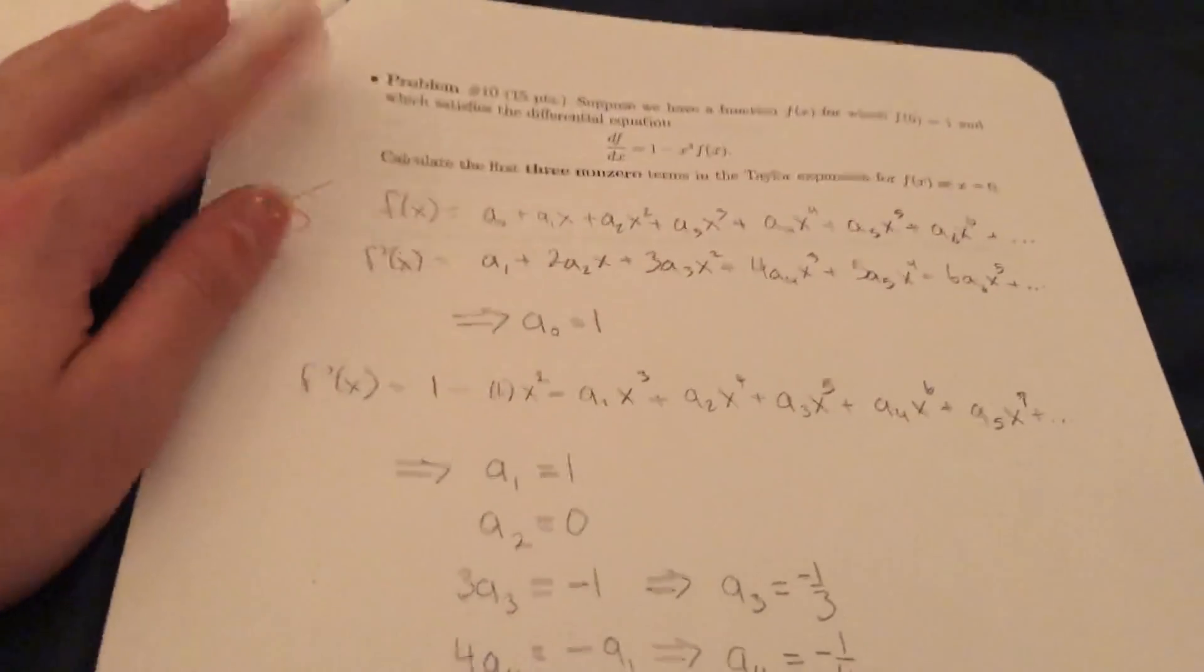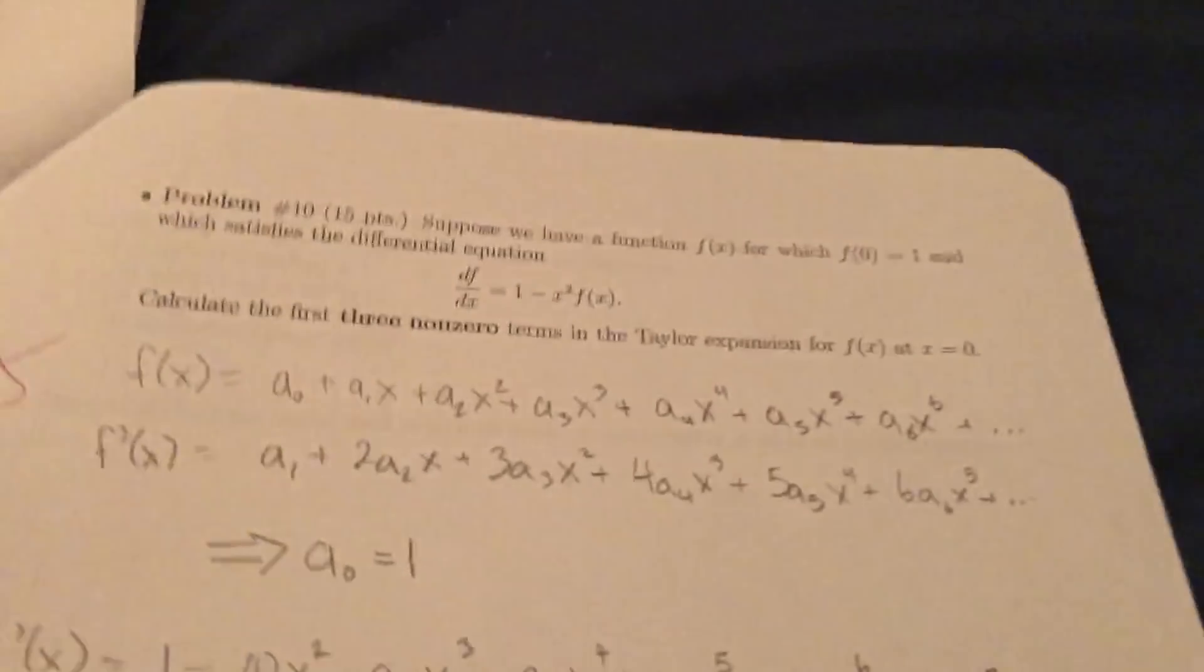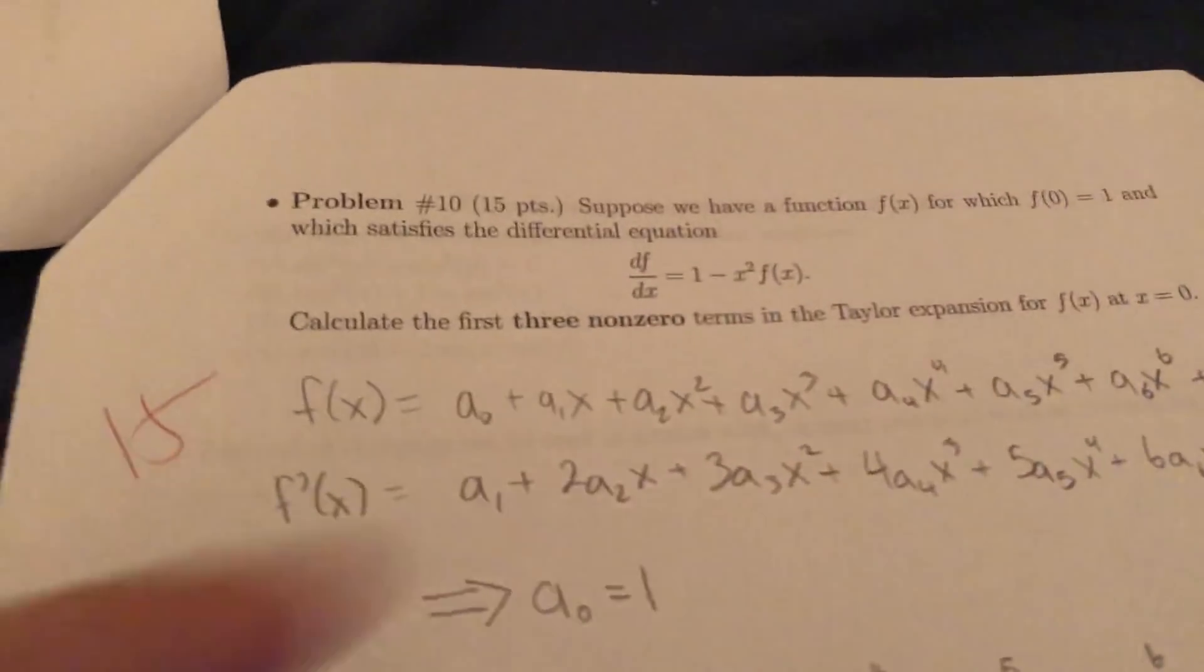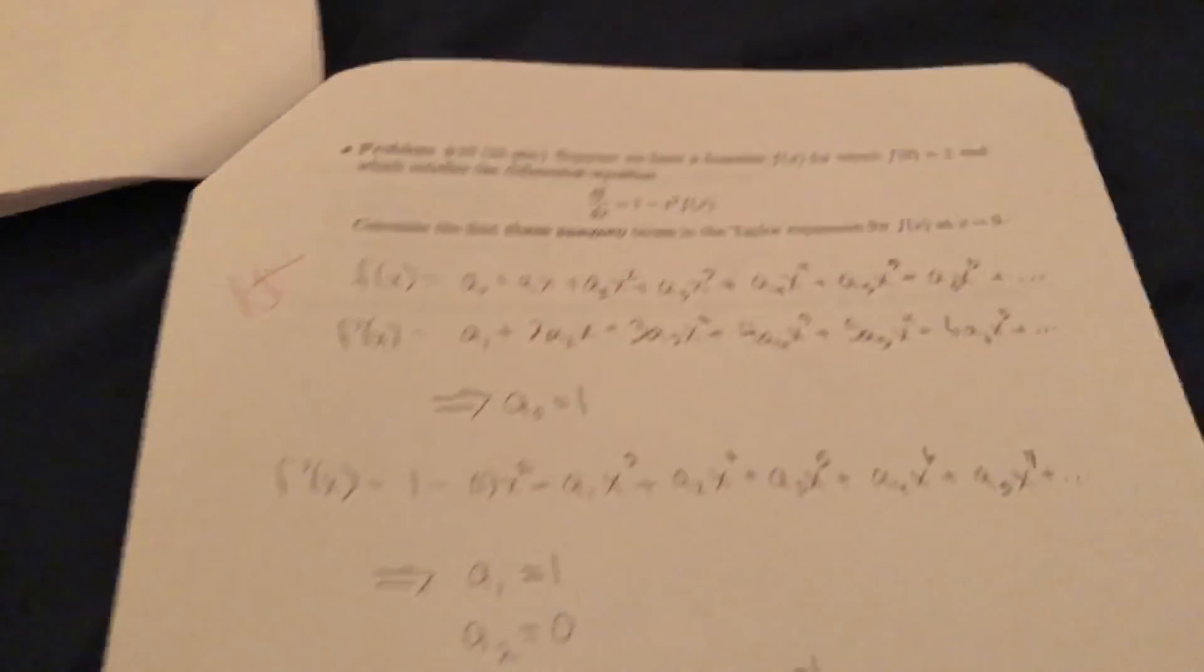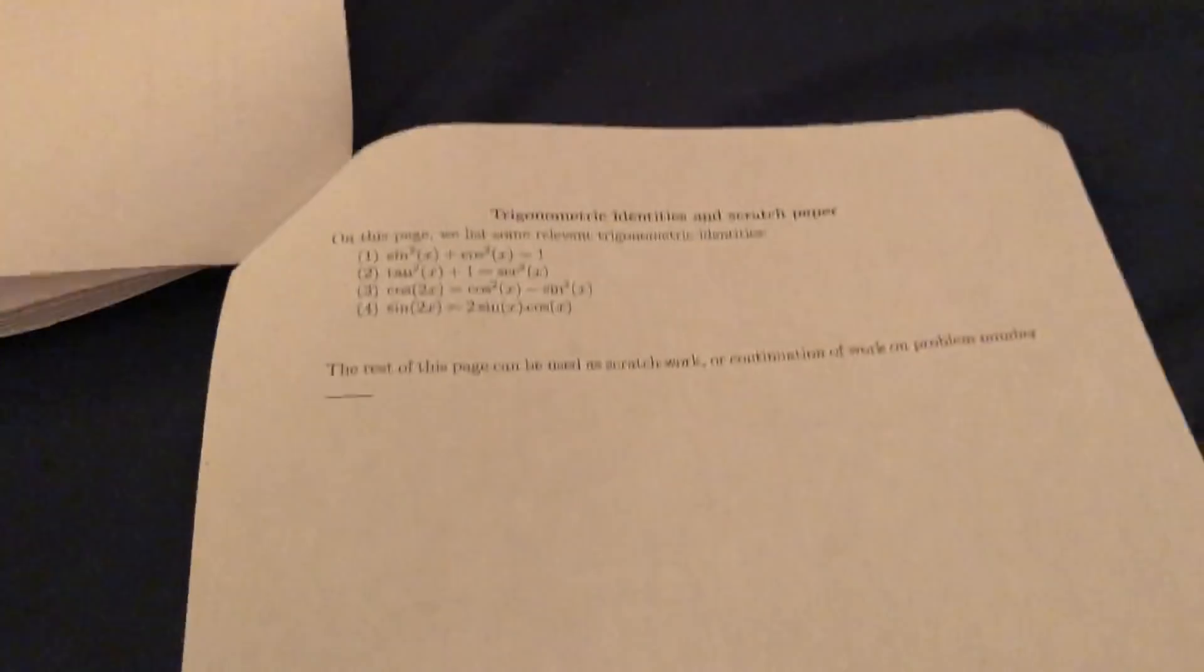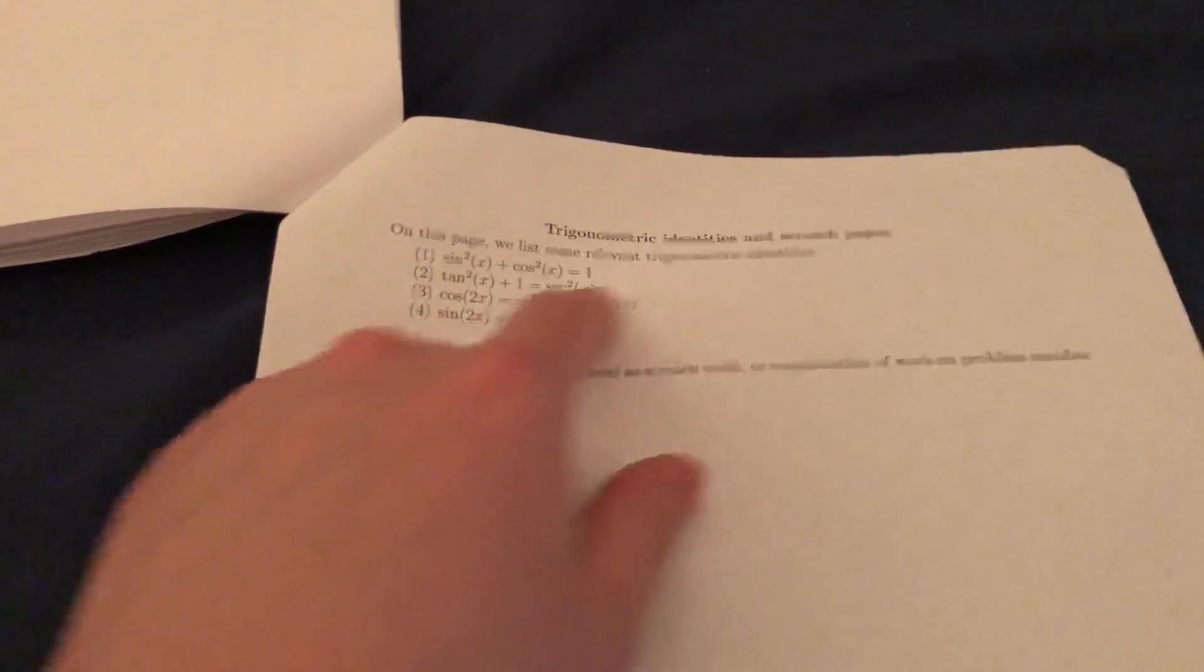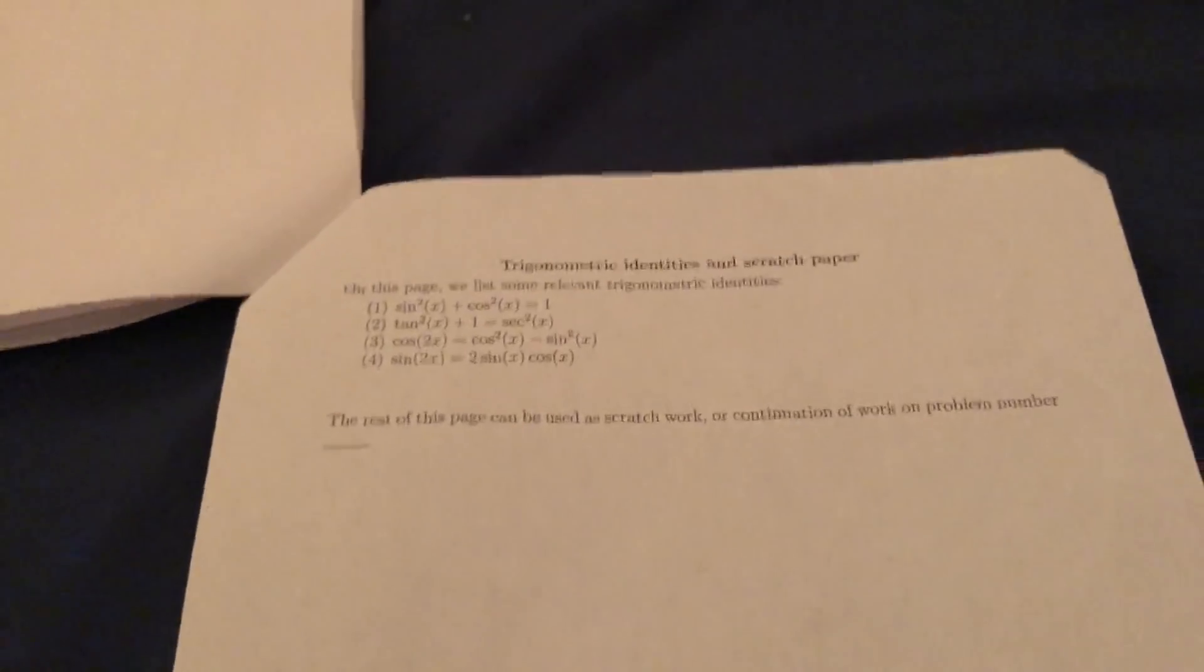And then last one I did really good. So it says, supposedly have the function f of x for which f(0) equals 1 and which satisfies the differential equation. This calculates the first three non-zero terms in the Taylor expansion. Taylor expansion is very important, especially in physics now. I have to learn actually how to apply them. So it's very important to learn about. And of course we have the trigonometric identities on the back. Okay, let's go to the next one.